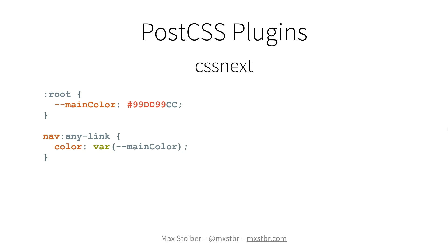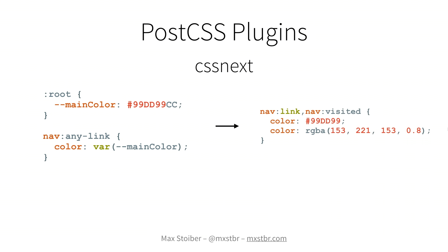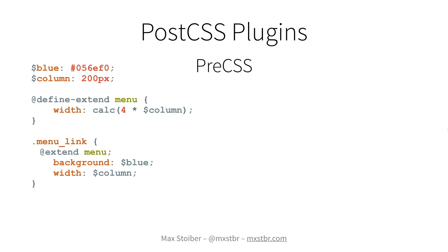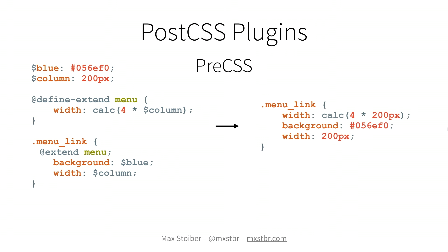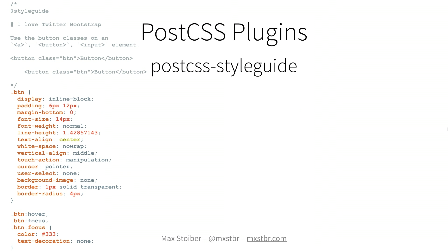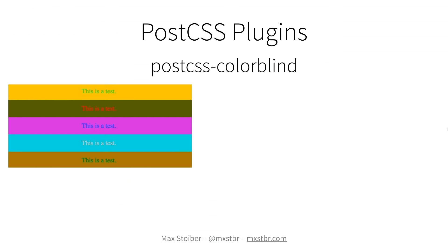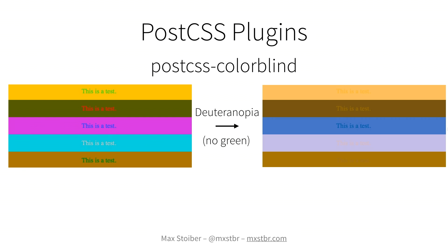There's CSS Next, which lets you use CSS4 features right now — variables, eight-digit hex numbers, and everything — and it turns that into now-usable CSS3 which all browsers support. There's pre-CSS, which adds exactly the same features as Sass, so you can turn your existing Sass code into PostCSS code just by dropping in PostCSS and pre-CSS. There's PostCSS Style Guide, which automatically generates style guides, and PostCSS Colorblind, which changes your colors based on color blindness some people may have, so you can see what your site looks like if somebody doesn't see any green.